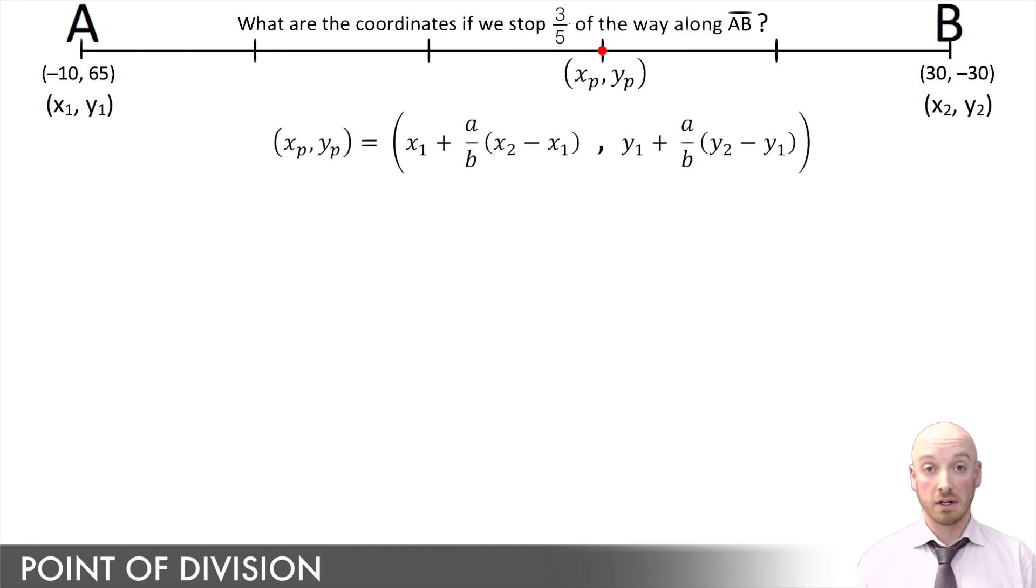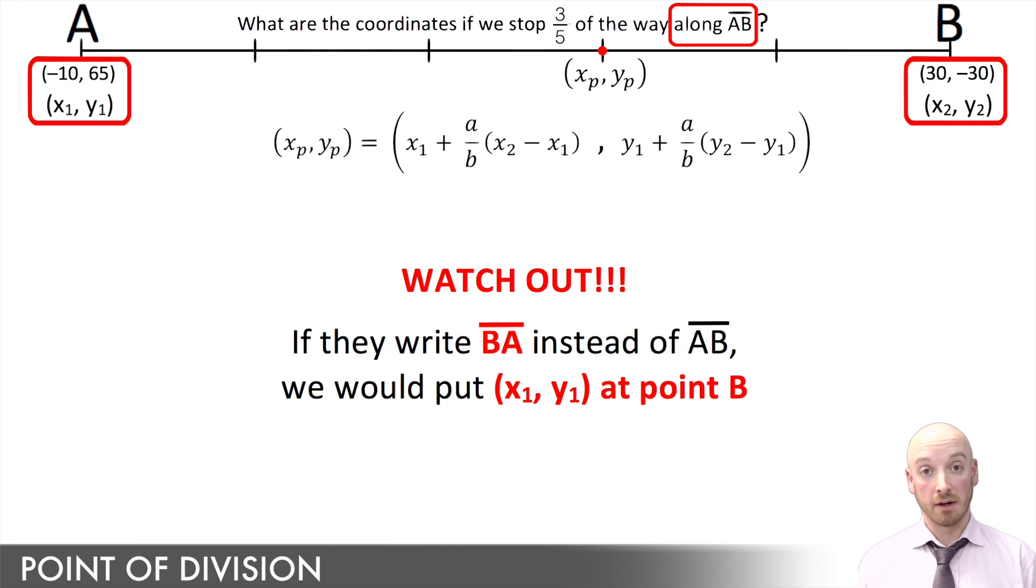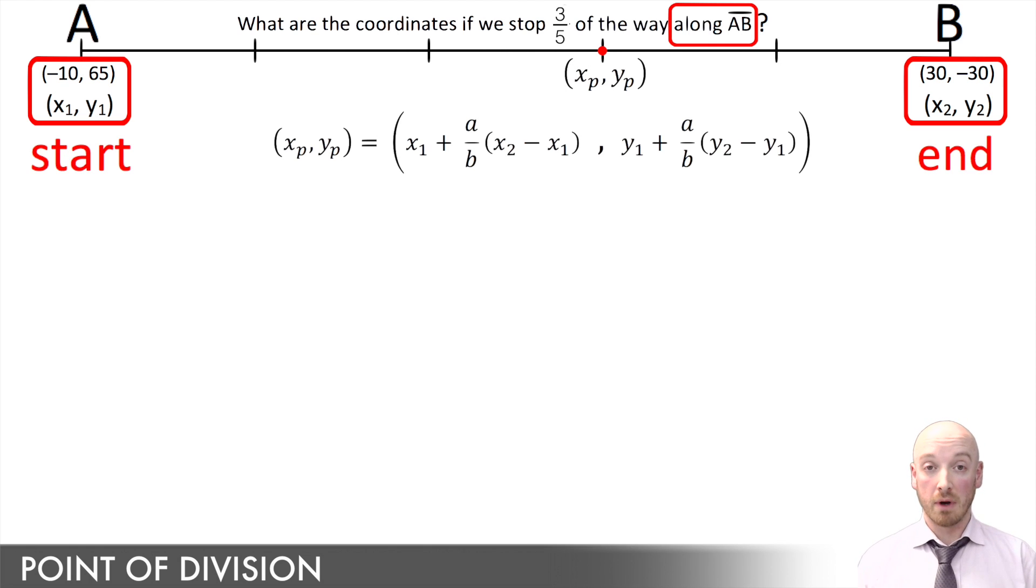Now, here, the notation is for a line segment. Notice how it says, along line segment AB. That's the capital A, capital B, with the line on top. Now, because in the way they wrote that, A comes before B in that notation, well, that means I'm starting at A and ending at B. If they wanted to trick us here, they might have written somewhere along line segment BA is where we stop. And if they wrote the B first before the A, that would mean I was starting at point B and ending at point A. But for this question, the way it's written, line segment AB, I'm starting at A and ending at B. So point A got X1, Y1, and point B, my ending point, got X2 and Y2.